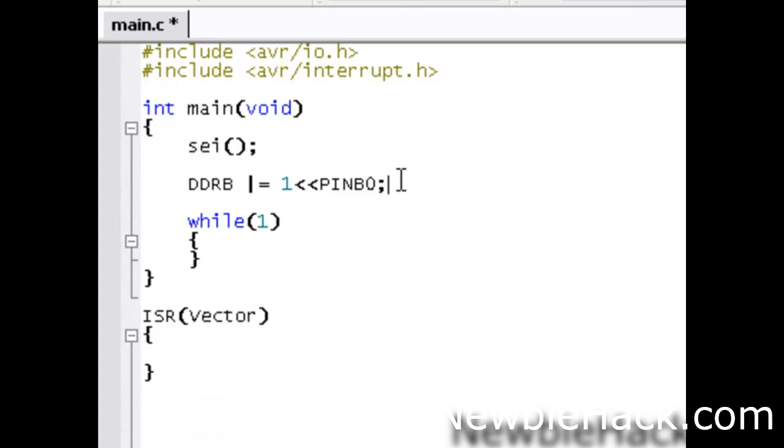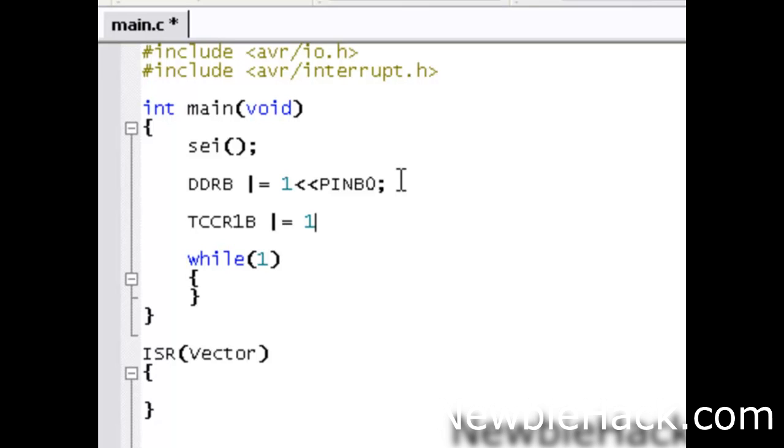So, we're going to use the timer control register for the 16-bit, which is 1, and we're going to be accessing the register B. And we're going to use the OR bitwise operation again, and we're going to put a 1 in the CS10. We're going to put another 1 in the CS11. So, this CS10, putting a 1 in CS10 and CS11 will give us 64 pre-scaler.